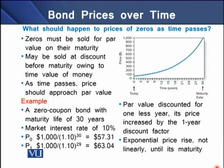What should happen to the prices of zero coupon bonds as time passes? Zero coupon bonds must be sold at par value at maturity, but may be sold at a discount before maturity due to the time value of money. As time passes, prices should approach par value, which is illustrated here: as time moves from the current date to maturity, the price of the bond rises toward par.